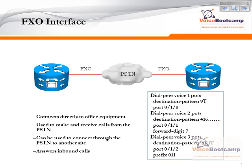Typically, an FXO port will answer an inbound call by default, unless you make the necessary configuration so that the router does not answer the call by default and lets the call pass through.